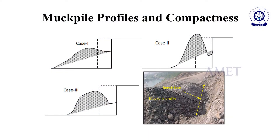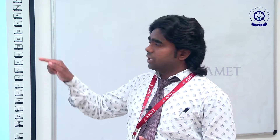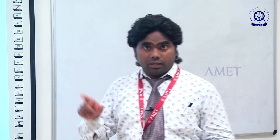In case 1, if the muck pile profile is as depicted in case 1, we are supposed to deploy a front end loader. I am talking about front end loader because we are currently discussing surface mine blast, not underground mine blast. In case of case 1 occurring, we will deploy a front end loader, which will work efficiently to handle the materials when the muck pile profile is as depicted in case 1.